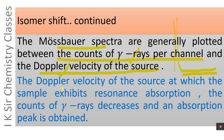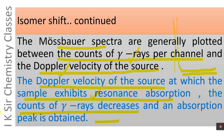At the Doppler velocity of the source at which the sample exhibits resonance absorption, the counts of gamma rays decrease largely and an absorption peak is obtained. When resonance absorption occurs, gamma rays are absorbed, causing the counts of gamma rays to decrease and an absorption peak to appear.